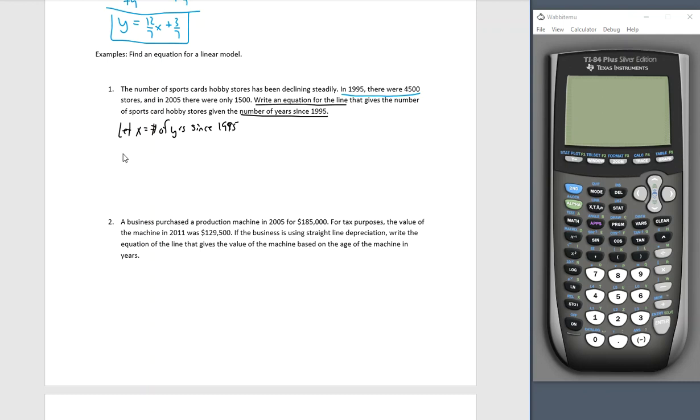In 1995 there were 4,500. But in 1995 that's an X value of zero, because 1995 is zero years after 1995. In 2005 there were 1500 stores. Each piece of information tells us something very specific. The last sentence tells us how to label our variable and what type of answer we're looking for.